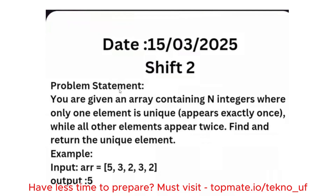The problem statement given by them is this: you are given an array containing N integers where only one element is unique. That means in the entire array there is only one element that has occurred only once, and all other elements have occurred twice. We need to find and return that unique element. For example, the sample array is [5, 3, 2, 3, 2, 3, 2, 3, 2] — three has occurred twice, two has occurred twice, only five has occurred only once.